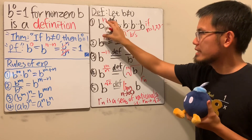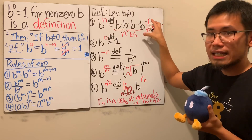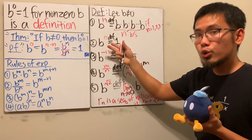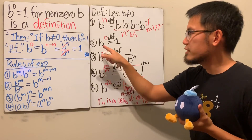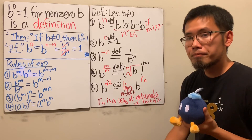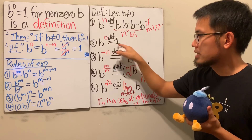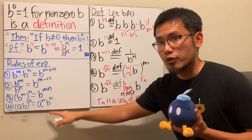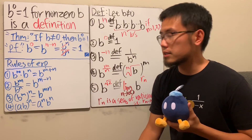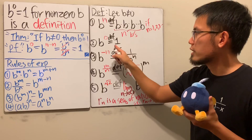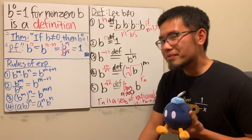When you have b to the zero power, you first have to define it to be one. You might wonder: could we have defined it to be some other number, like 17? Yes, but if you define b to the zero power to be 17, that will violate the rules of exponents. The rules of exponents are fundamental, and you do not want to violate them. Defining it as one is the only definition that makes sense and follows all the rules of exponents.